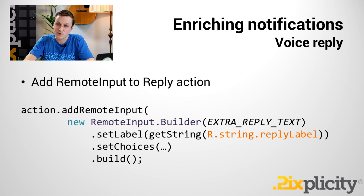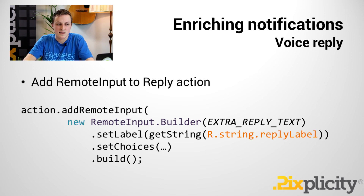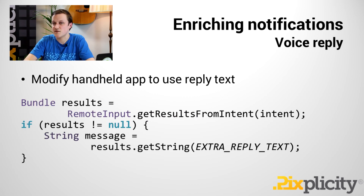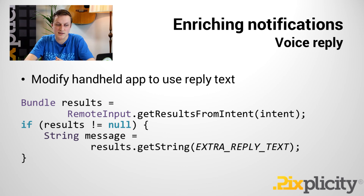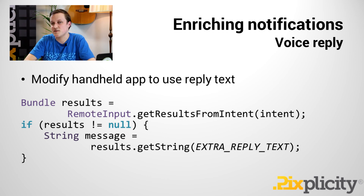So we can simply use our action and add a remote input using the remote input builder. Here we specify which extra in our bundle this text should return into our application, specifying a label and also specifying any sort of preset choices that the user can select. We then modify our handheld application so that, very trivially, we only need to extract this data from the intent — where we extract the results from our intent using the remote input static method and simply specify that our message should contain this string result.